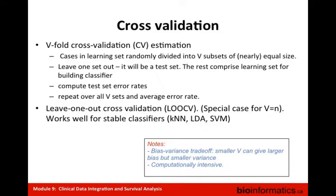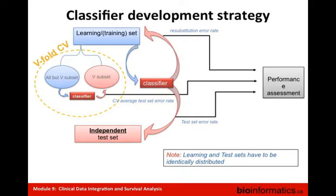There is a bias-variance trade-off: smaller V can give larger bias but smaller variance. Cross-validation is also computationally intensive. This slide summarizes all the common steps: start with the learning/training set, build a classifier, perform cross-validation on the learning set, evaluate its performance on an independent test set ideally, and all these performance assessments contribute to the overall classifier performance. An important note: learning and test sets should be identically distributed, accounting for additional factors such as race, age, and status of certain markers or hormones.